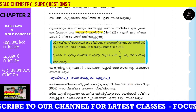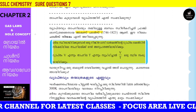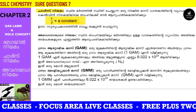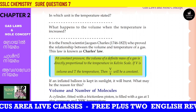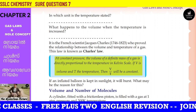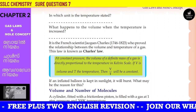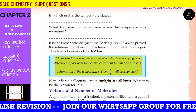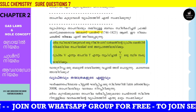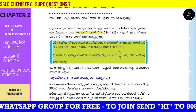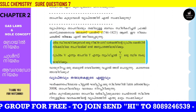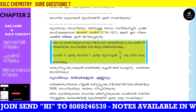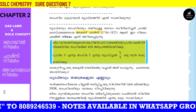What is absolute zero? The value is minus 273 degrees Celsius. At this temperature the volume becomes zero, and this temperature is called absolute zero.